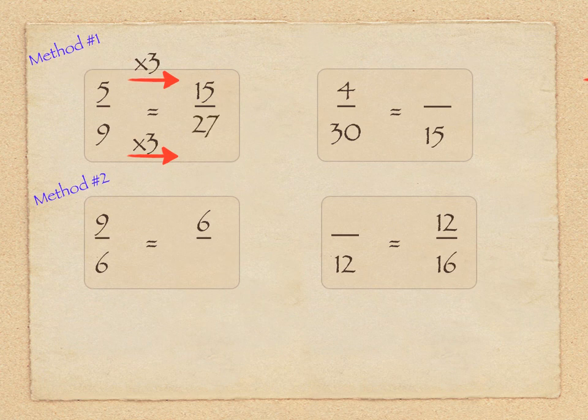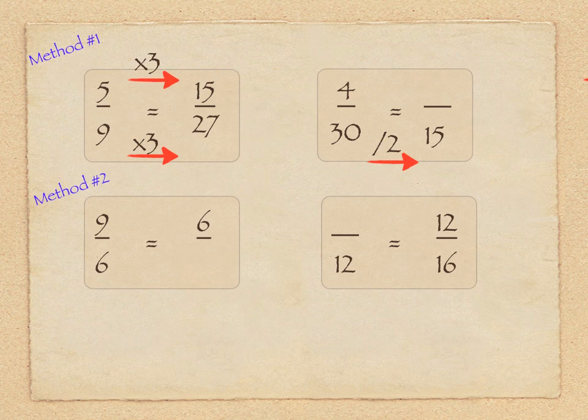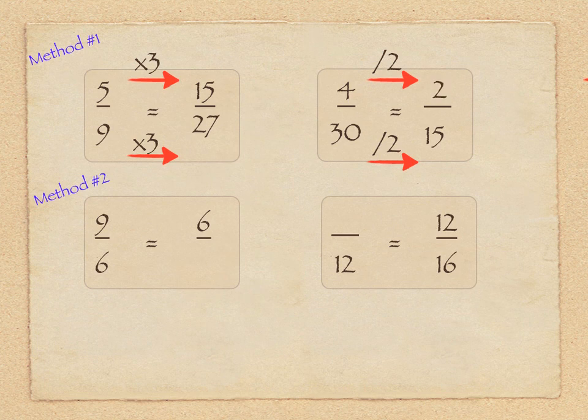Same thing with the one on the right where we have four over thirty is equivalent to something over fifteen, and we can connect those values on the bottom. This time it's gonna be through division. Thirty divided by two is fifteen. So if this really is a proportion, these are equivalent, we should be able to do the same thing up top. Four divided by two gives us two over fifteen, completing the proportion.